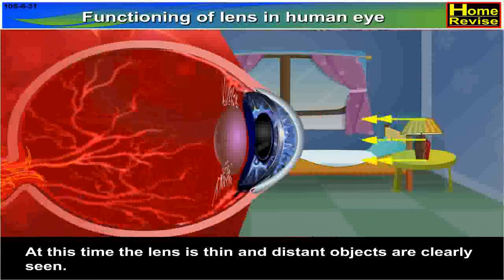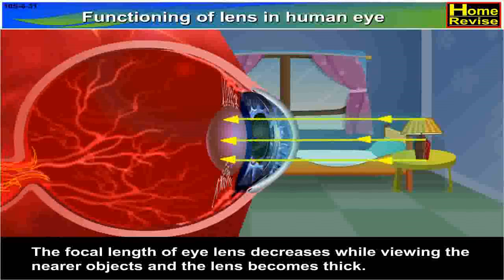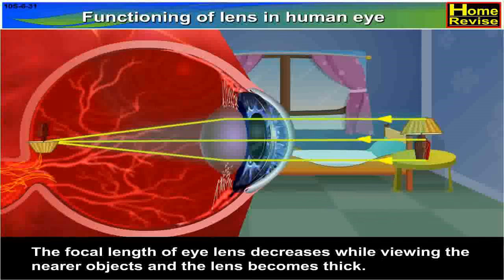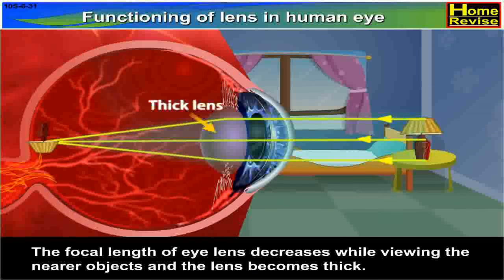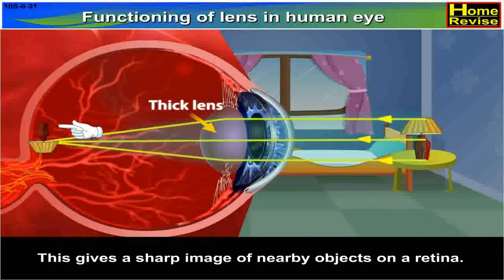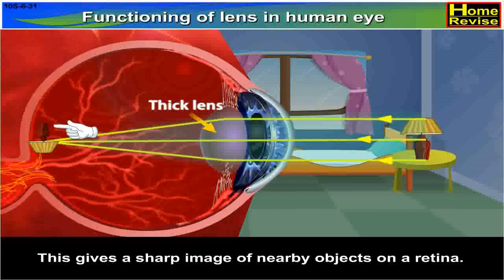The focal length of the eye lens decreases while viewing nearer objects and the lens becomes thick. This gives a sharp image of nearby objects on the retina.